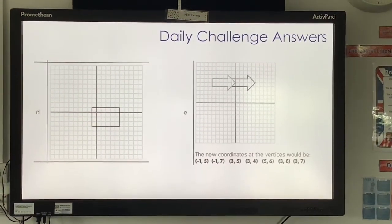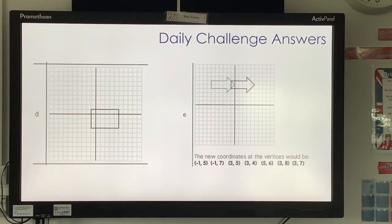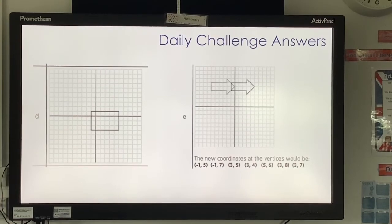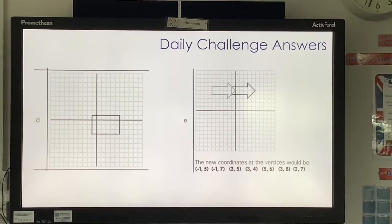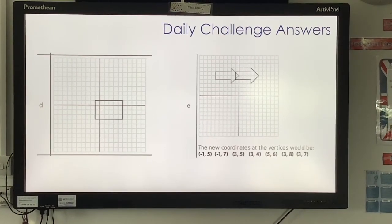Your new coordinates, (-1, 5), (-1, 7), (3, 5), (3, 4), (5, 6), (3, 8), (3, 7). You might not have them in that order depending on where you chose your coordinates, but just tick them off one by one to check them.